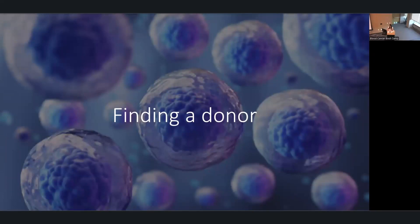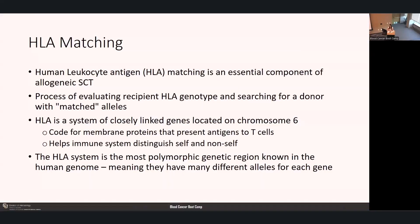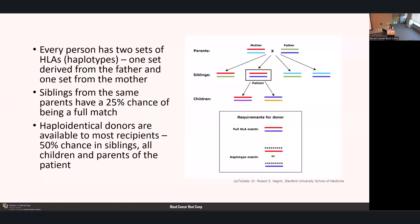Now going into the process of finding a donor. Human leukocyte antigen matching is an essential component of allogeneic stem cell transplant. It's the process of evaluating a recipient's HLA genotype and searching for a donor with matched alleles. HLA is a system of closely linked genes on chromosome 6 that code for membrane proteins presenting antigens to T cells, helping the immune system distinguish self from non-self. It is the most polymorphic genetic region in the human genome. Every person has two sets of HLA called haplotypes—one from their father and one from their mother.